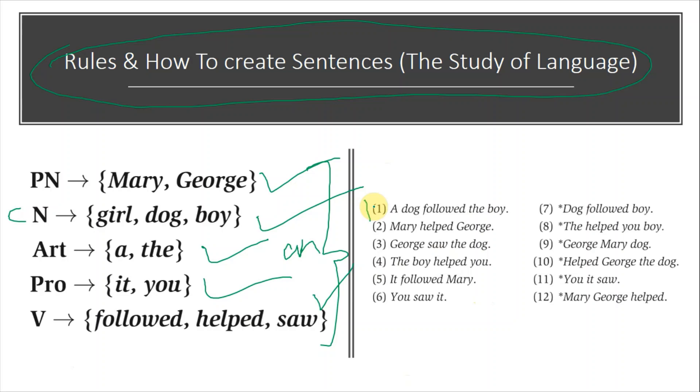If we look at the fourth sentence, 'the boy helped you,' in this first a noun phrase is used, and in it an article and noun are used: 'the boy.' Then after that, a verb phrase is used.